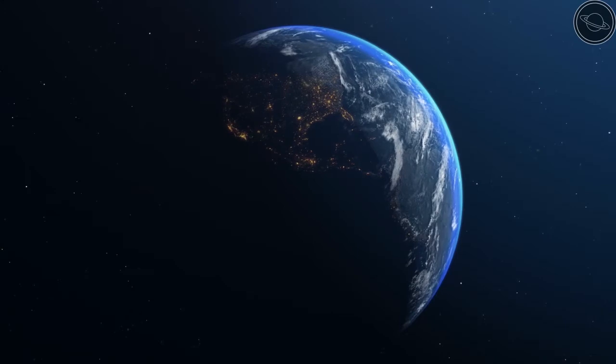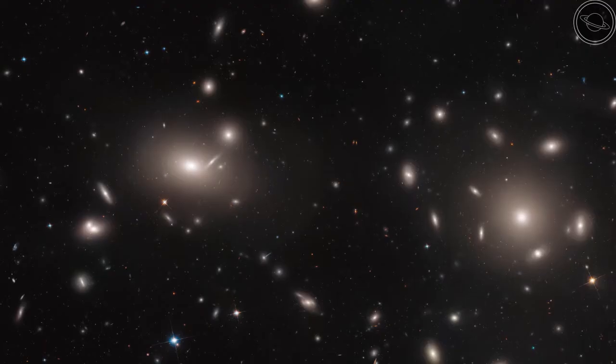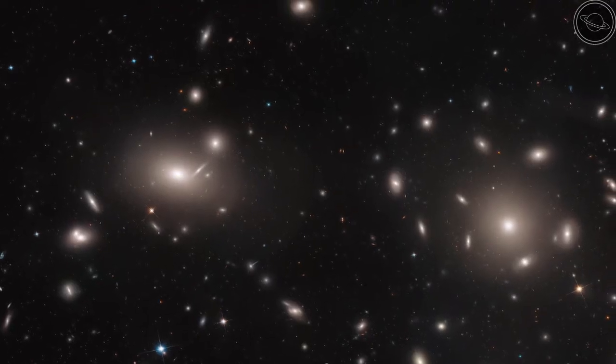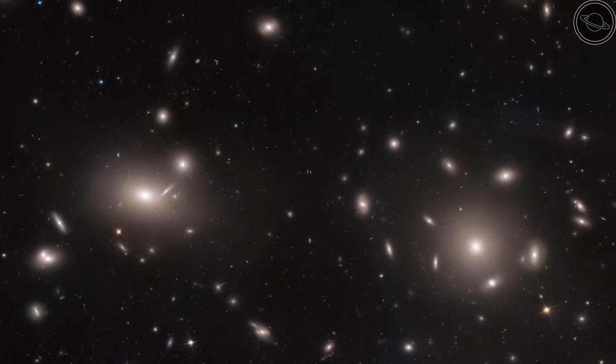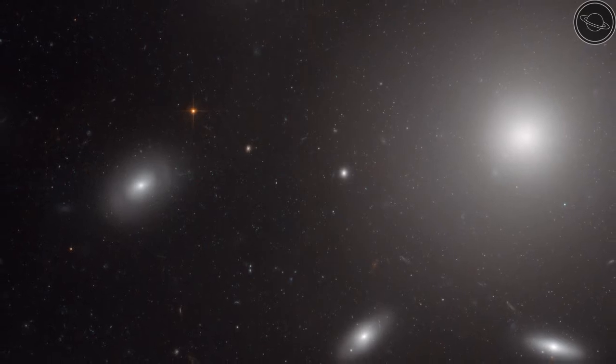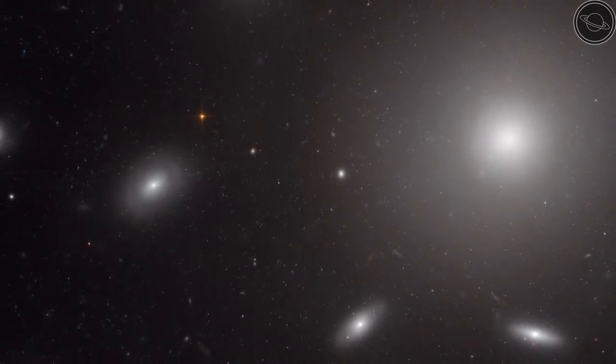The search for dark matter began with the Swiss American astrophysicist Fritz Zwicky, who observed something very strange in the Coma Galaxy Cluster. This cluster consists of 1,000 individual galaxies that all circle around a central point, much like bees around a beehive. However, Zwicky noticed that the galaxies within the cluster were moving way too fast for the amount of matter in the galaxies.